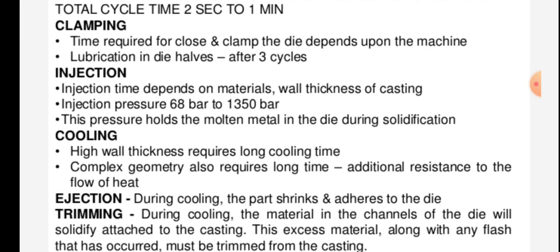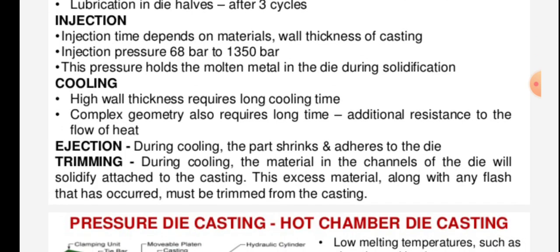Clamping: time required to close and clamp the die depends upon the machine. Lubrication of the die occurs after every 3 cycles. Injection time depends on materials, wall thickness of the casting, and injection pressure ranges from 68 bar to 1350 bar.